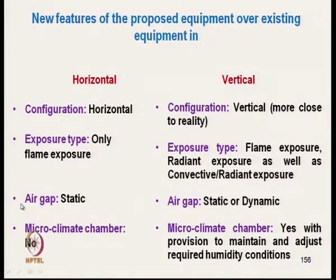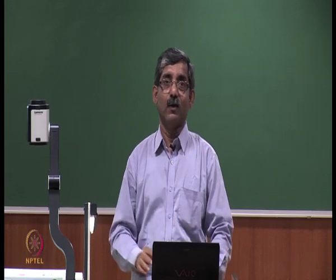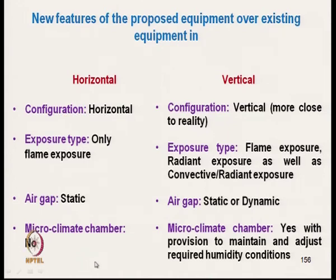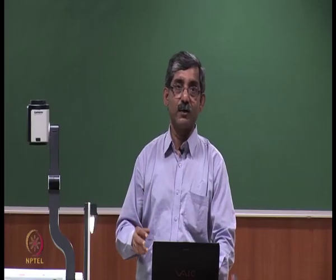In horizontal mode, the air gap was static with no change. In the vertical test, the air gap can be kept static or changed to different levels dynamically. A microclimate chamber, which was absent in horizontal condition, is present in the vertical exposure test and allows adjustable humidity conditions. Let us look at the basic structure of this instrument.